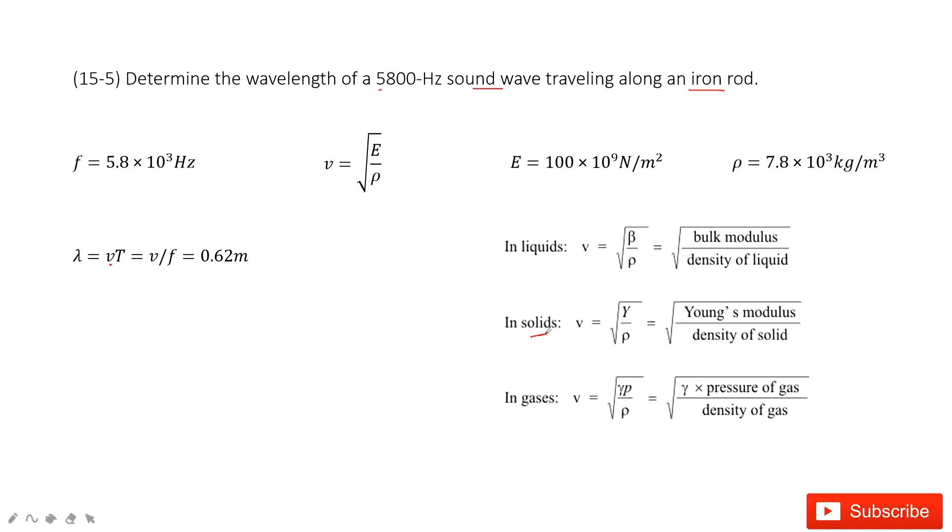So we can find the speed of the wave in this equation. We take the Young's modulus divided by density of this solid, then squared. We can get the wave speed for this wave.